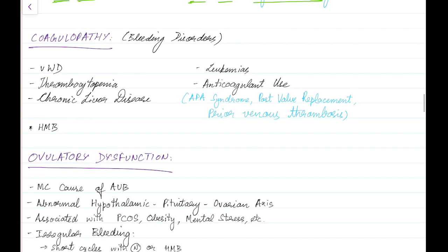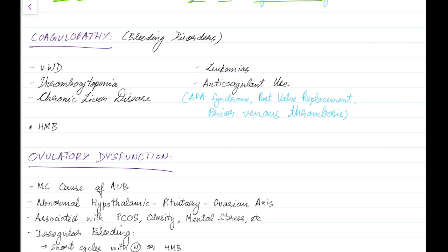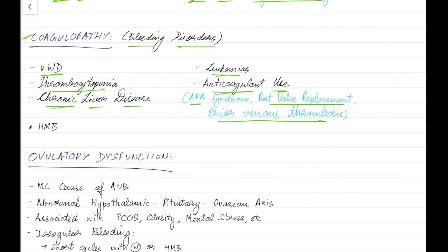Now let us see about the non-structural causes. The first is coagulopathy or bleeding disorders. The various bleeding disorders that can lead to abnormal uterine bleeding are von Willebrand disease, thrombocytopenia, chronic liver disease, leukemias, and anticoagulant use. Anticoagulants are indicated in cases of antiphospholipid antibody syndrome, post-valve replacement, and history of prior venous thrombosis. Women on anticoagulants and those with coagulopathy are more prone to develop heavy menstrual bleeding.